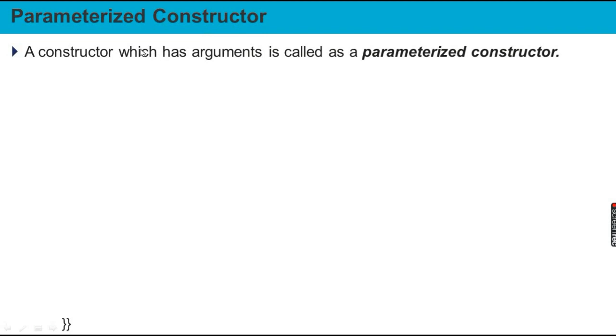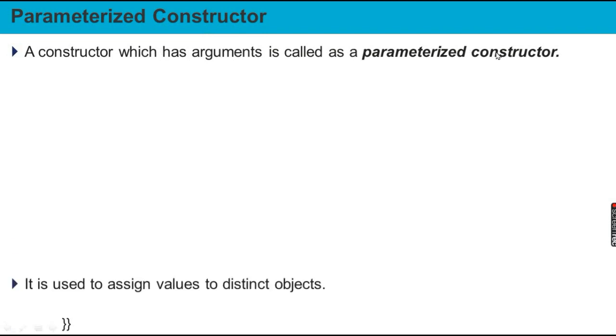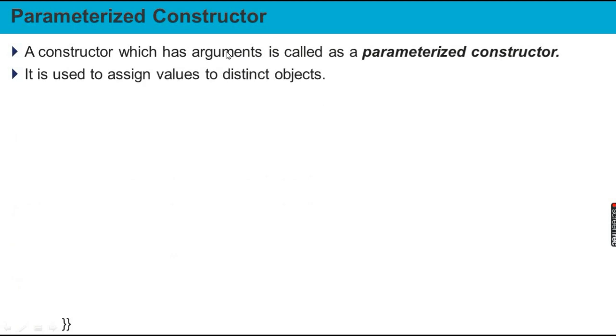A constructor which has an argument is called a Parameterized Constructor. It is used to assign values to distinct objects.